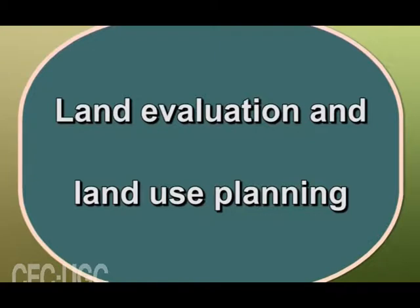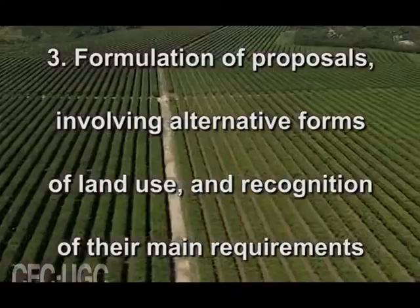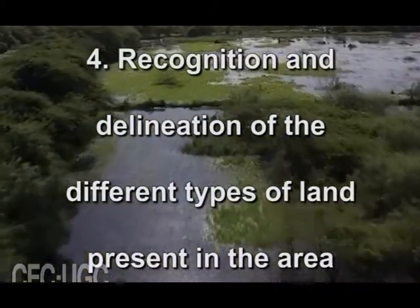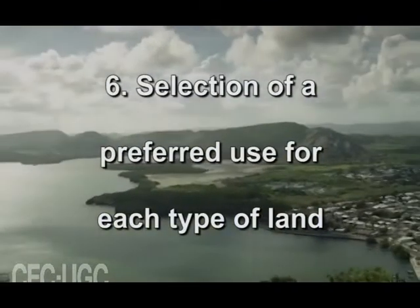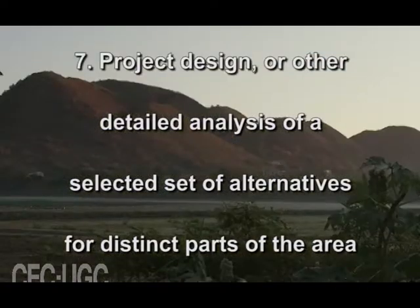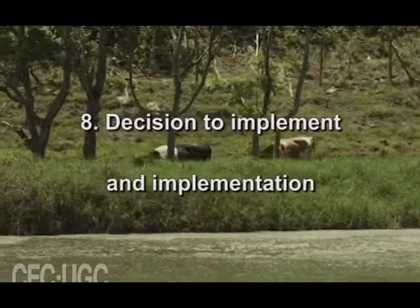Land evaluation is only part of the process of land use planning. Its precise role varies in different circumstances. The land use planning process can be represented by the following generalized sequence: recognition of a need for change; identification of aims; formulation of proposals involving alternative forms of land use and recognition of their main requirements; recognition and delineation of the different types of land present in the area; comparison and evaluation of each type of land for the different uses; selection of a preferred use for each type of land; and project design or other detailed analysis of a selected set of alternatives for distinct parts of the area.